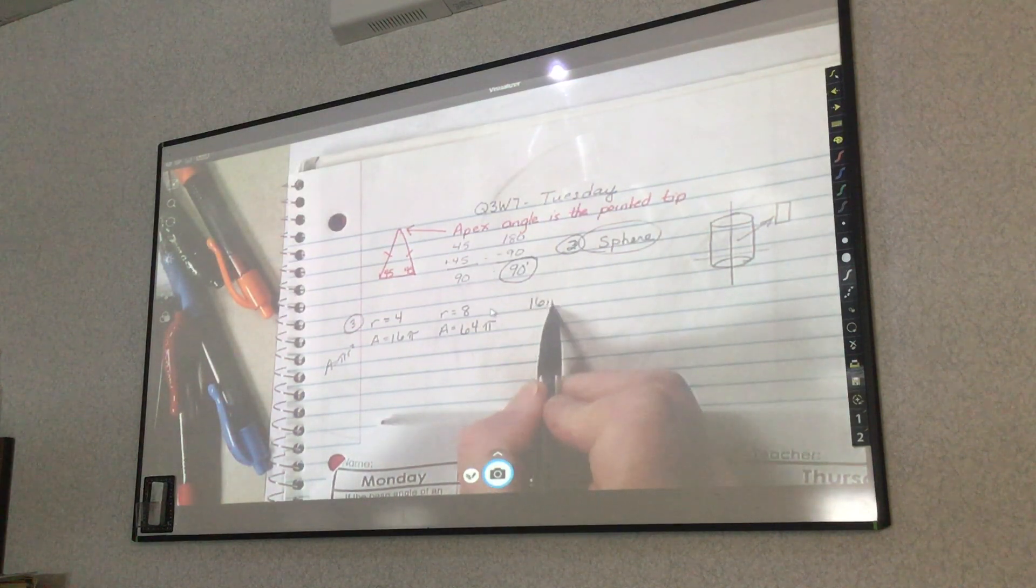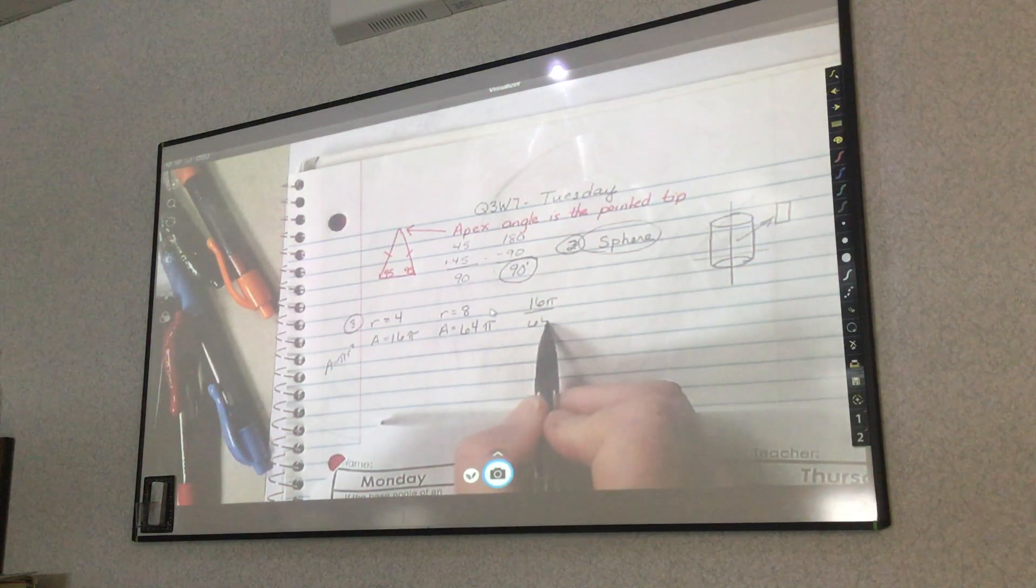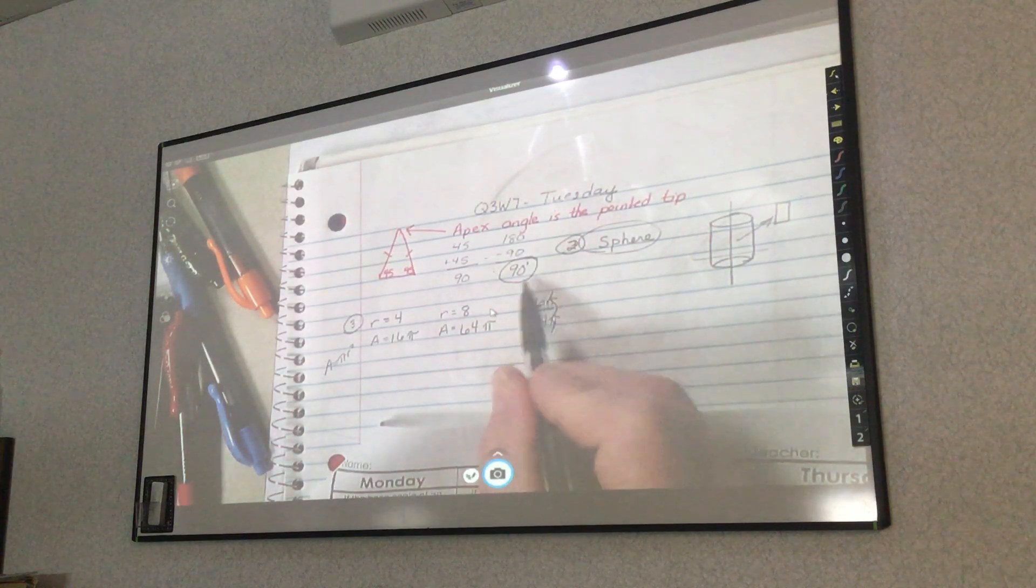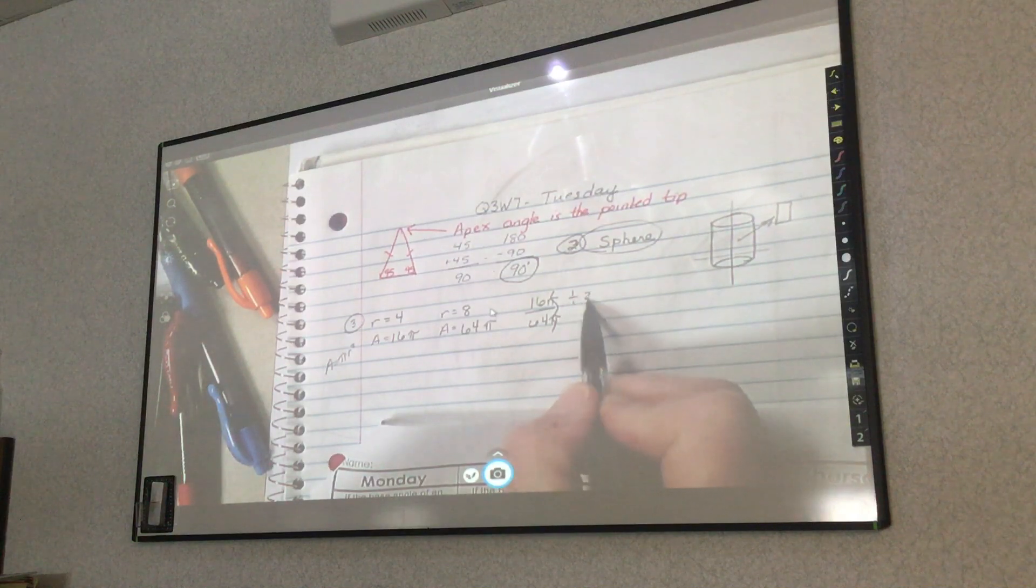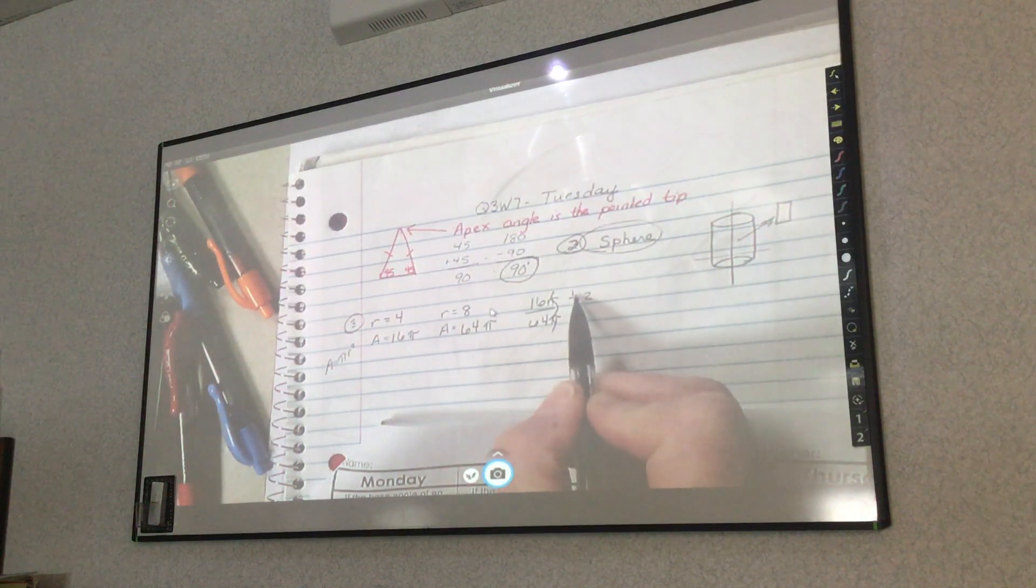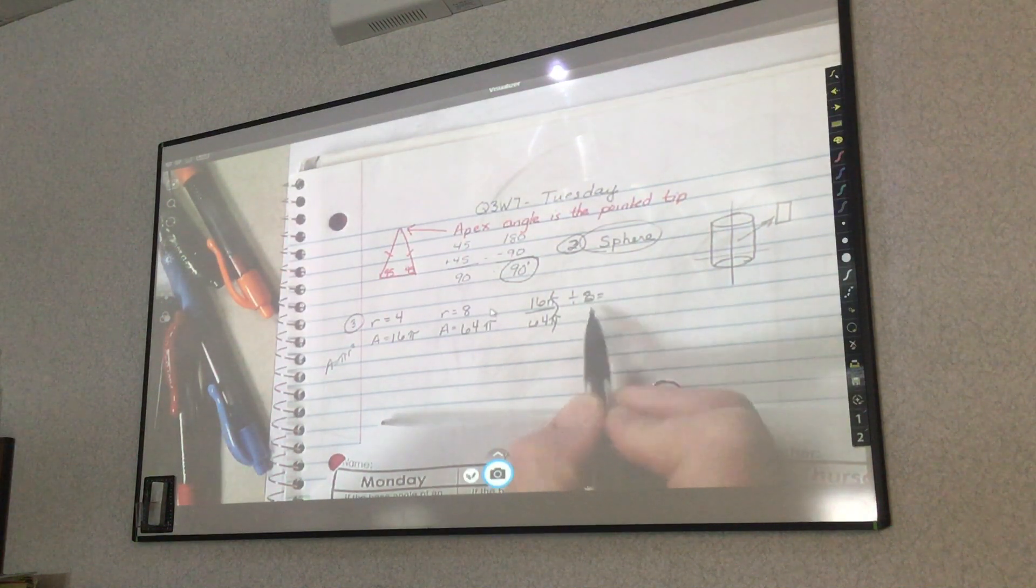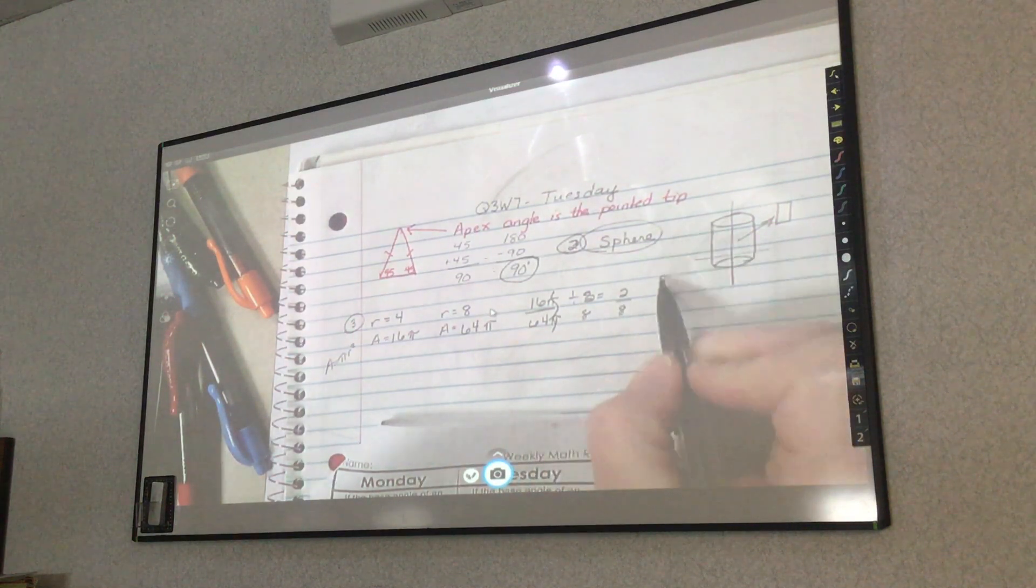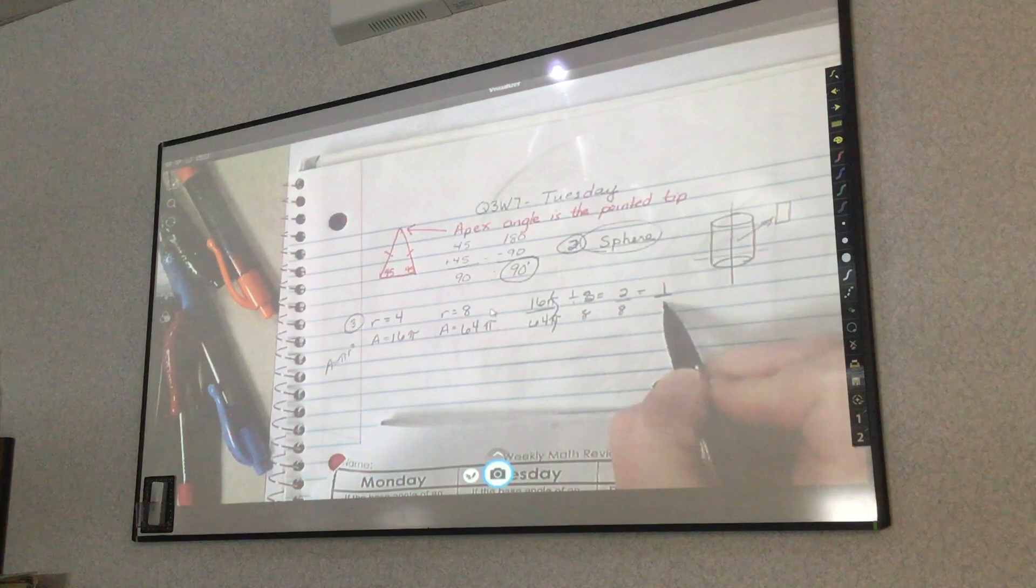The pi's can cancel each other out, and it's easier for me to work with these numbers to reduce by 2. Or I'm actually going to reduce it by 8, and I get 2 eighths, which then is 1 fourth.